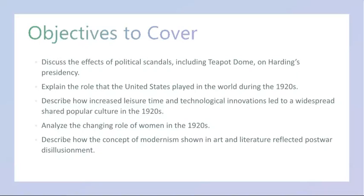Finally, we'll wrap up the week by describing how the concept of modernism in art and literature reflected post-war disillusionment. The aftermath of World War I left a huge mark on American society, fueling a sense of disillusionment and cultural upheaval known as the lost generation. We'll explore how artists and writers responded to this existential crisis through the lens of modernism, a movement characterized by experimentation, fragmentation, and a rejection of traditional norms and values.